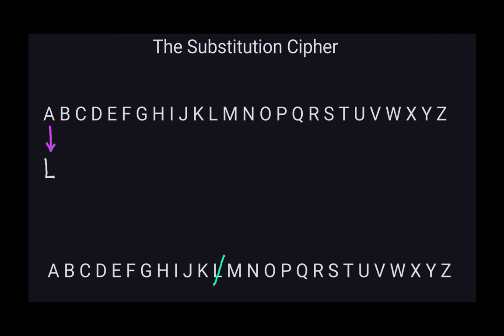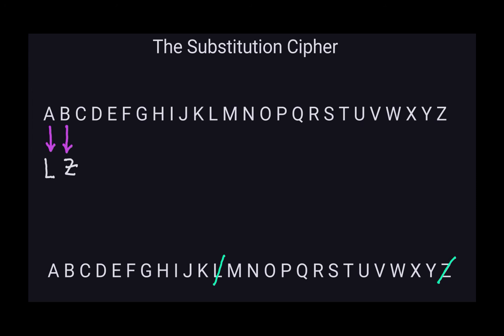Now let's do the same thing with the letter B. I can transform B into capital Z. So B is transformed into Z, and now I have to cross out the letter Z from my alphabet below, because that tells me I cannot use it again for any other letter. I keep doing that until I've assigned every letter on top and transformed it into some other letter at the bottom.